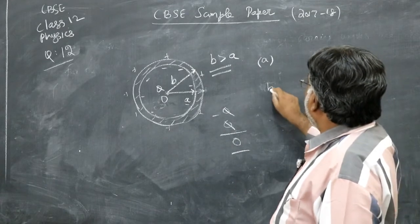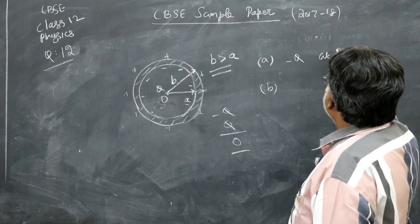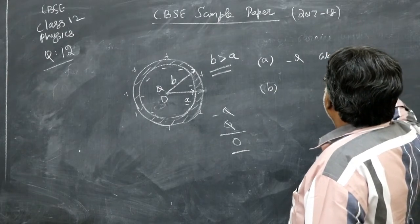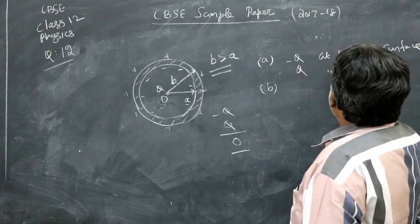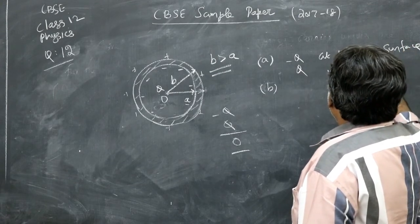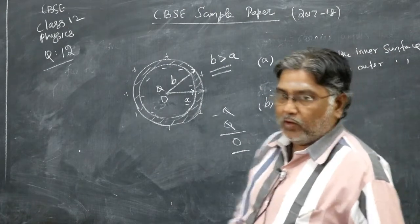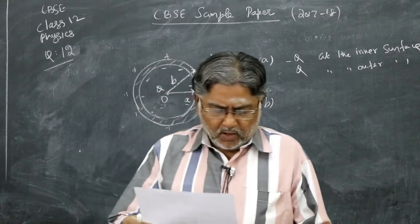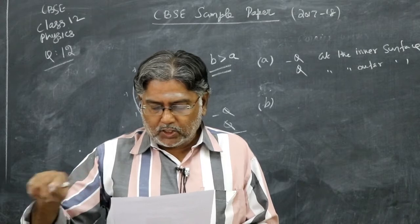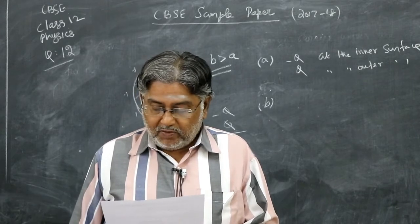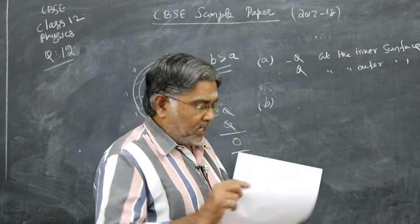Then B. So we will see what is asked. The magnitude of electric vector at a distance, subdivision 1, R is equal to a by 2 and subdivision 2, R is equal to 2B. So magnitude of electric field vector.